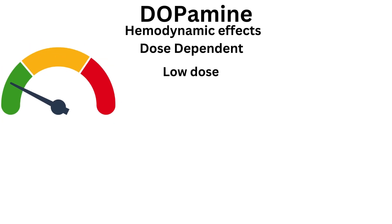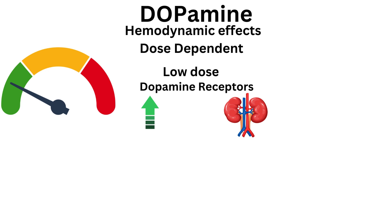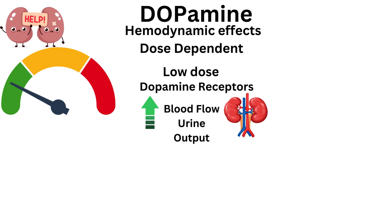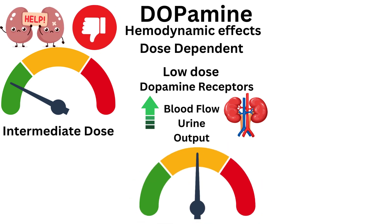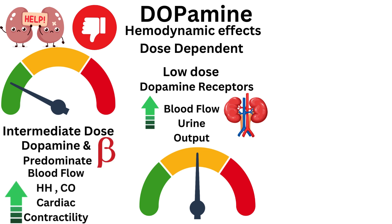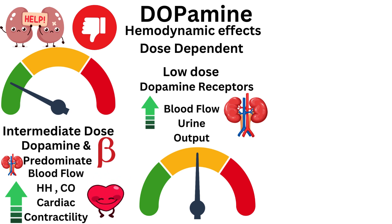For low-dose dopamine, which augments renal dopamine receptors, it may increase renal blood flow and urine output; however, the use of low-dose dopamine to prevent or treat acute kidney injury is not recommended. For the intermediate dose, dopamine and beta-adrenergic effects predominate, resulting in increased renal blood flow, heart rate, cardiac contractility, and cardiac output.